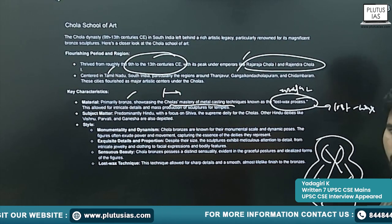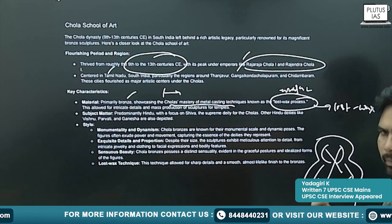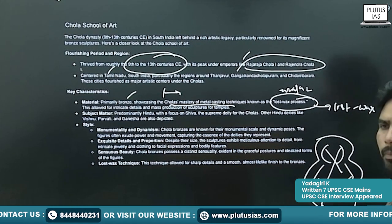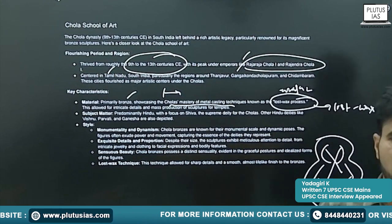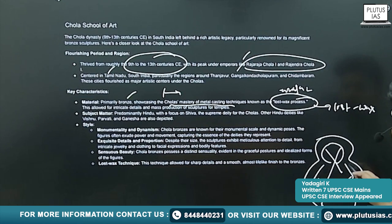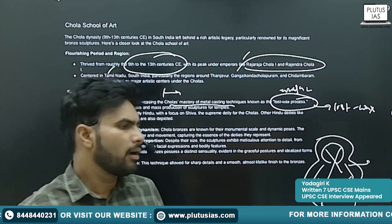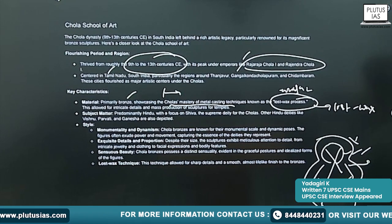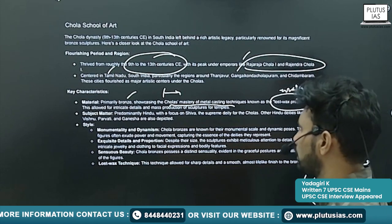After removing all the melted wax, the melted bronze liquid is poured into the burnt clay. Once the metal enters the clay, it takes the shape of the earlier wax image. Once the metal is frozen, the outside clay is removed, and you get the bronze idol. This is known as the lost wax method or lost wax process.